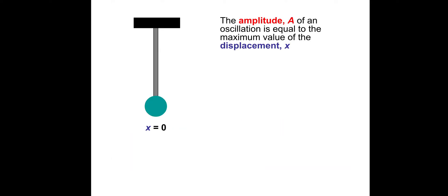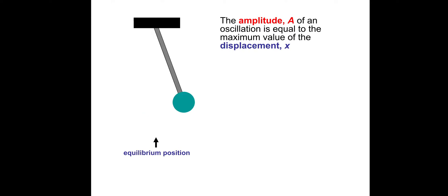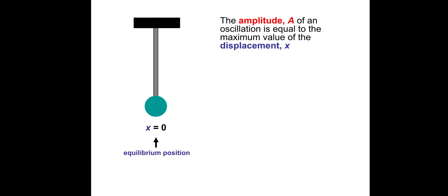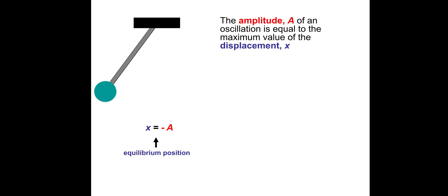So the amplitude of an oscillation is equal to the maximum value of the displacement from the equilibrium position. And then the amplitude in the opposite direction is negative A, indicating which direction you designate as positive. Once you designate a direction as positive, the opposite direction will, of course, be negative.